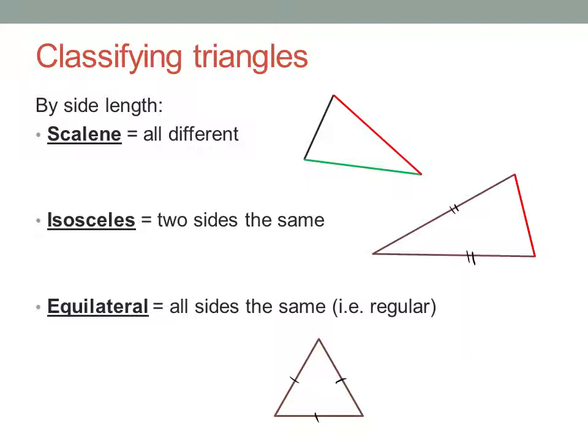If two sides are the same, it's called isosceles. That's Greek for identical legs.